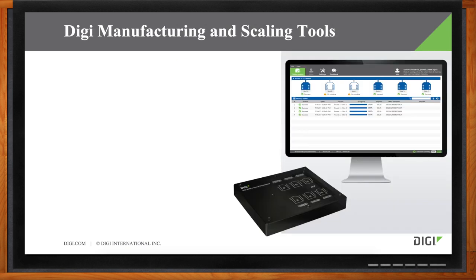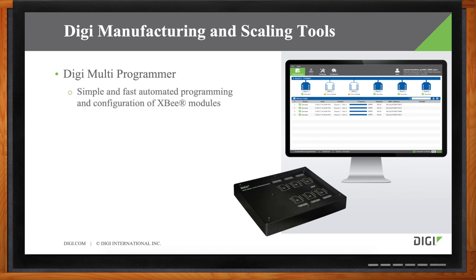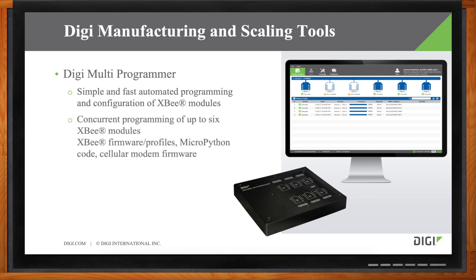One way Digi does a fantastic job here is with our Digi Multi-Programmer. Mouser also adds a value-added service where they will help program bulk batches of modules before they are shipped to an end customer. The Digi Multi-Programmer is a simple and fast automated way to program XP modules — you can program up to six modules, and if you plug in two devices you can go up to 12 or even 24. The software lets operators graphically see when a module has been successfully coded. It also gives you the ability to export programming session data, with detailed logs you can put in your own corporate database.